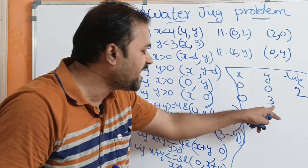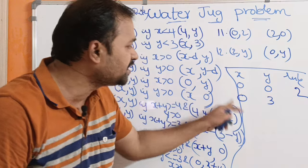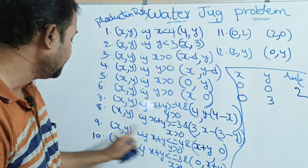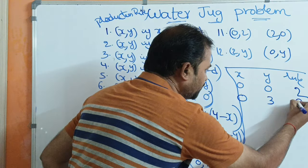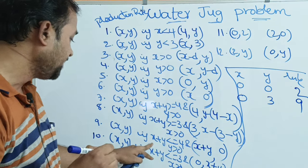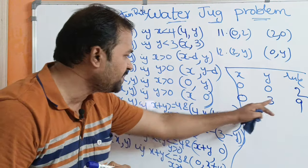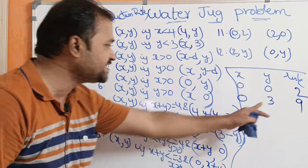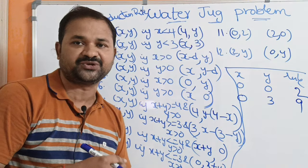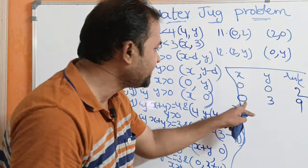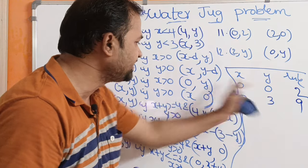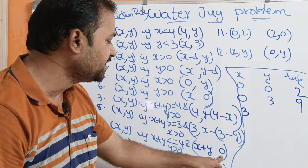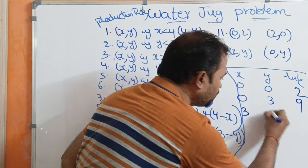Next, we pour the water from the 3-liter jug into the 4-liter jug. We apply the ninth rule: x plus y = 0 plus 3 = 3, which is less than or equal to 4 — condition true. y is greater than 0 — condition true. New state is (x plus y, 0) = (3, 0).